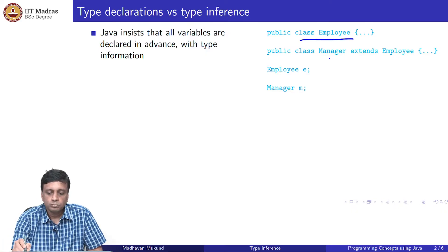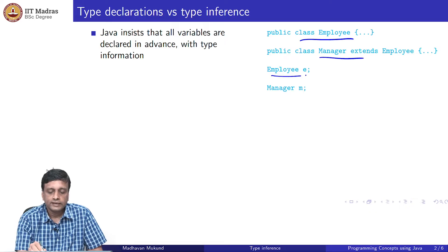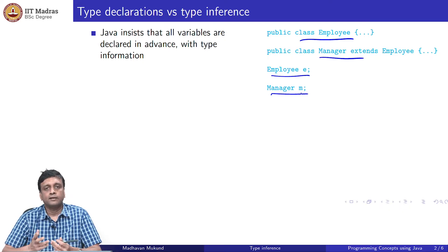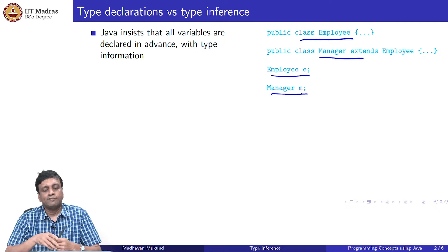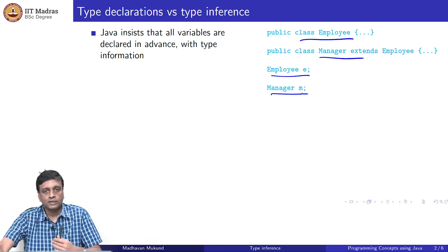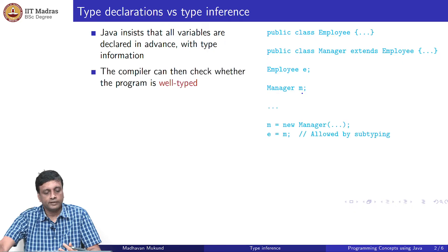For instance, suppose we have these two public classes, manager and employee. We could say that e is a variable of type employee and m is a variable of type manager. This tells the Java compiler that if any value is assigned to e, it must be compatible with employee; if any value is assigned to m, it must be compatible with manager. It allows Java to check that certain assignments and updates are compatible with the declared types.